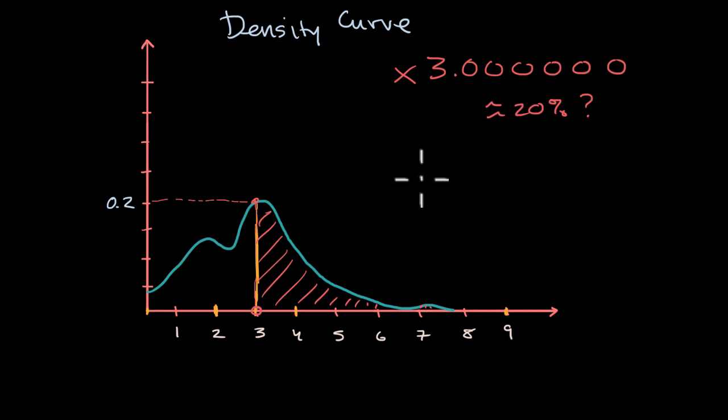And so instead, you could say what percentage falls in the interval maybe that is greater than or equal to 2.9 and less than or equal to 3.1. And so once you have an interval, then you actually can look at the area. So we're going to go from 2.9 to 3.1. So now we have an interval that actually has width.